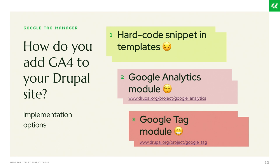There is a Google Analytics module for Drupal, which is great if that's the only product you're interested in using. But using the Google Tag system opens you up to incorporate a lot of other third-party tags and products, so I feel like that's the better way to go than just the plain Google Analytics module.